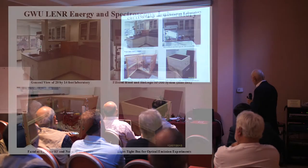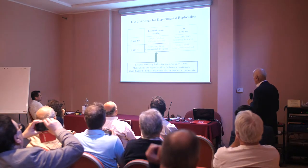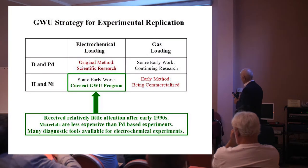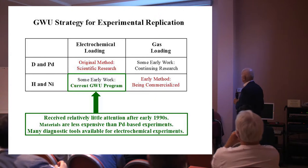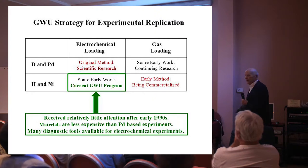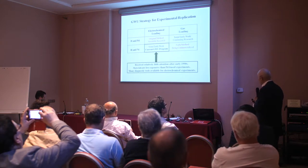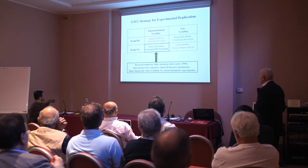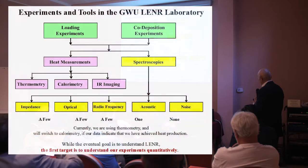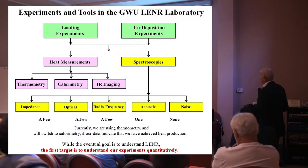This is what our laboratory looks like — a room in the engineering building. We have a Faraday cage for low-level electrical measurements and an optical container for low-level light measurements. We have a choice between using deuterium and palladium, and hydrogen and nickel, with different loading approaches. This is the original Fleischmann-Pons approach; there's a lot of work here towards commercialization. We chose to work on electrochemical loading of hydrogen and nickel because it resulted in a lot of strong reports in the early 90s. The materials are less expensive, which is good because we don't have a funded program, and there are a lot of diagnostic tools available. We do thermometry until we think we have something and then we'll do calorimetry. We have an IR imager and I'll show you one example of data from that.